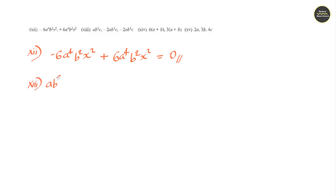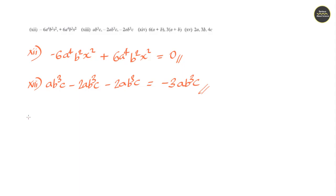Question number 13: ab cube c minus 2ab cube c minus 2ab cube c. Adding these, it is minus 4ab cube c minus 1, so answer would be minus 3ab cube c.